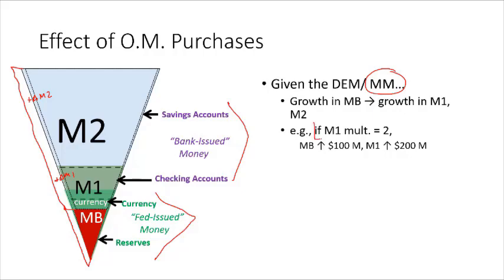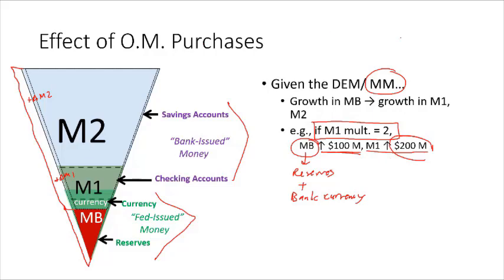If the Fed increases the monetary base — reserves and bank vault currency — by $100 million, ultimately M1 will rise by $200 million. However, if the Fed is doing monetary targeting, they would be watching M1 directly. The money multiplier is somewhat slippery because velocity is not stable and the multiplier itself is subject to change, making it an unstable tool. But that's the ultimate effect of open market purchases.